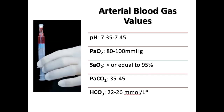Your arterial blood gas values: the pH is between 7.35 and 7.45. Your PO2 normal is between 80 to 100 millimeters of mercury. Saturation of oxygen is greater than or equal to 95% — that's normal. Your PaCO2 is 35 to 45, and your bicarb, your HCO3, is 22 to 26. Although your textbook describes it as 21 to 28, we're going to go with 22 to 26.